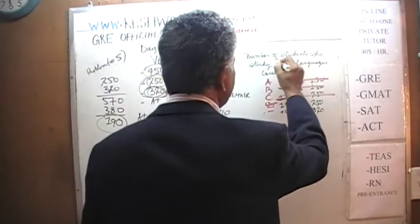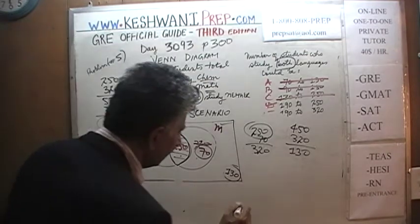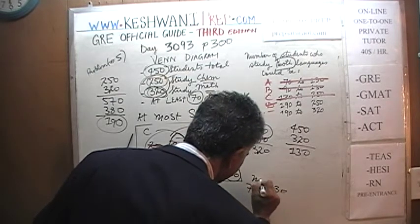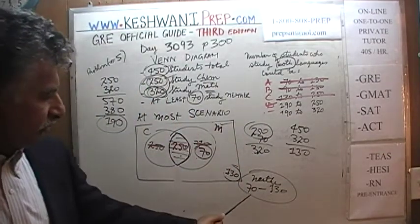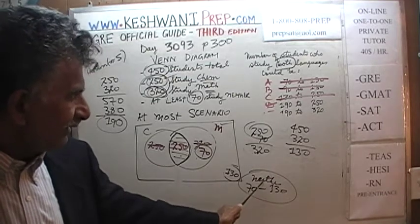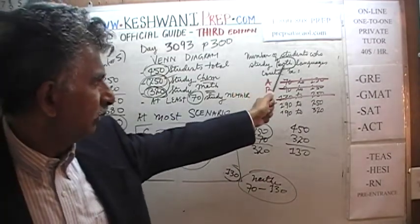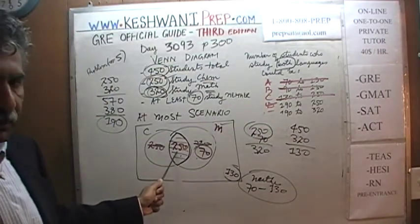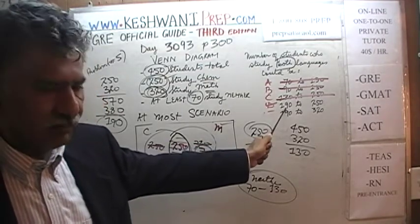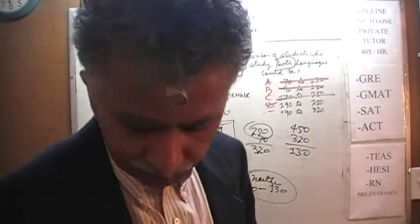So the range of students studying neither goes from 70 to 130. But the question asks for the number studying both — don't get confused. In the least scenario, those studying both was 190; in the at-most scenario it was 250. So the range for students studying both is 190 to 250. We were down to D and E, and we just established it is 190 to 250. The answer is D, not E.